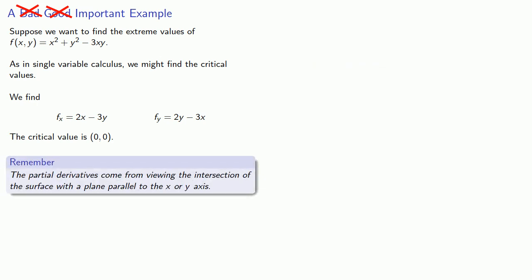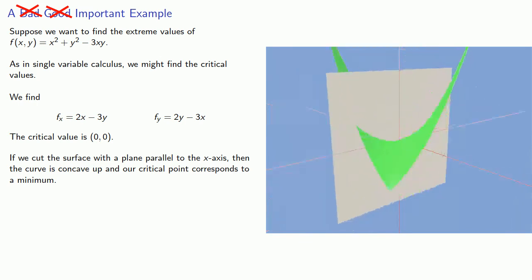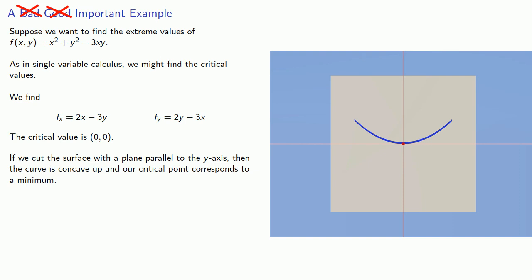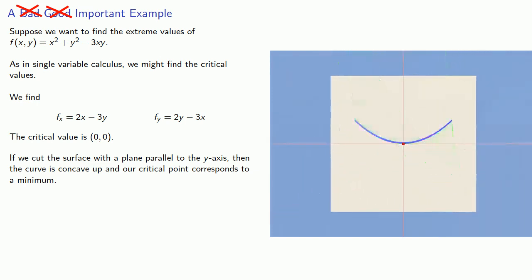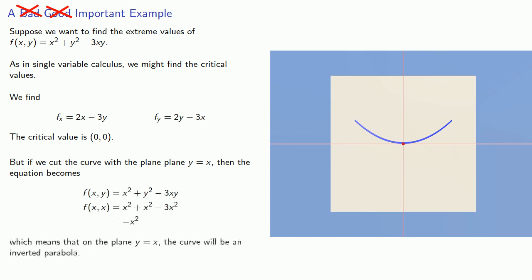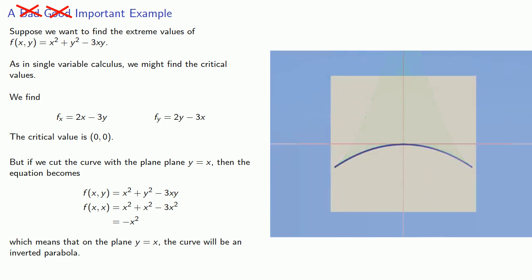Remember, the partial derivatives come from viewing the intersection of the surface with a plane parallel to the x or y axis. If we cut the surface with a plane parallel to the x axis, the curve is concave up and our critical point corresponds to a minimum. Similarly, if we cut the surface with a plane parallel to the y axis, the curve is also concave up and our critical point corresponds to a minimum. But if we cut the surface with a plane y equals x, then the equation gives an inverted parabola.